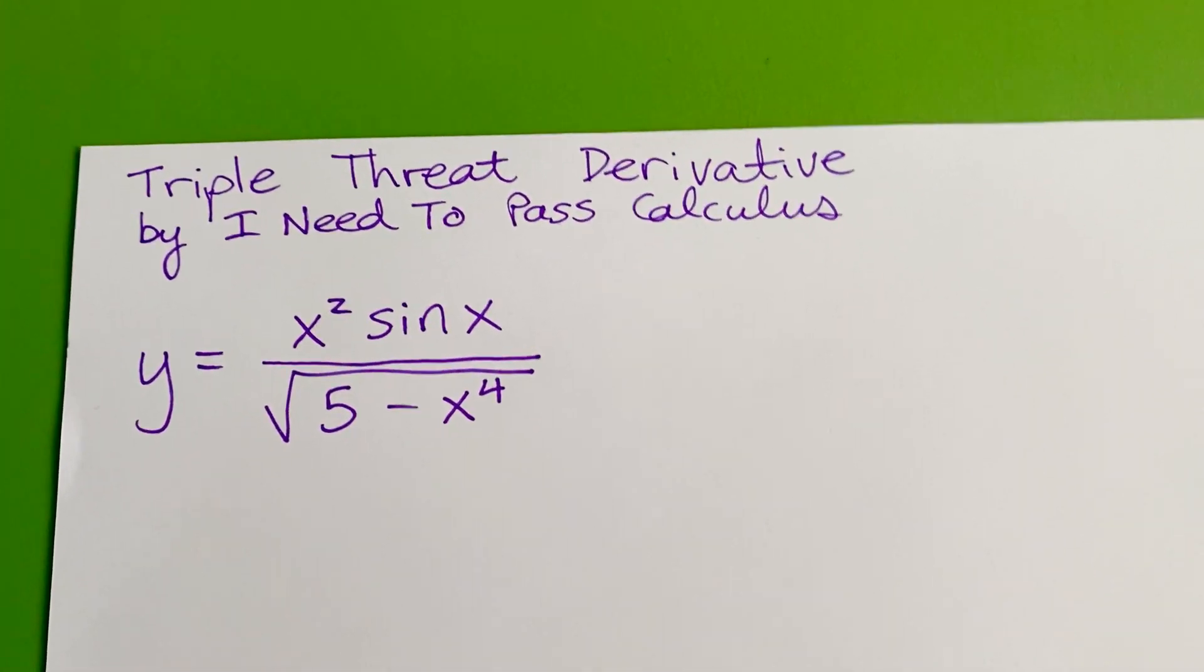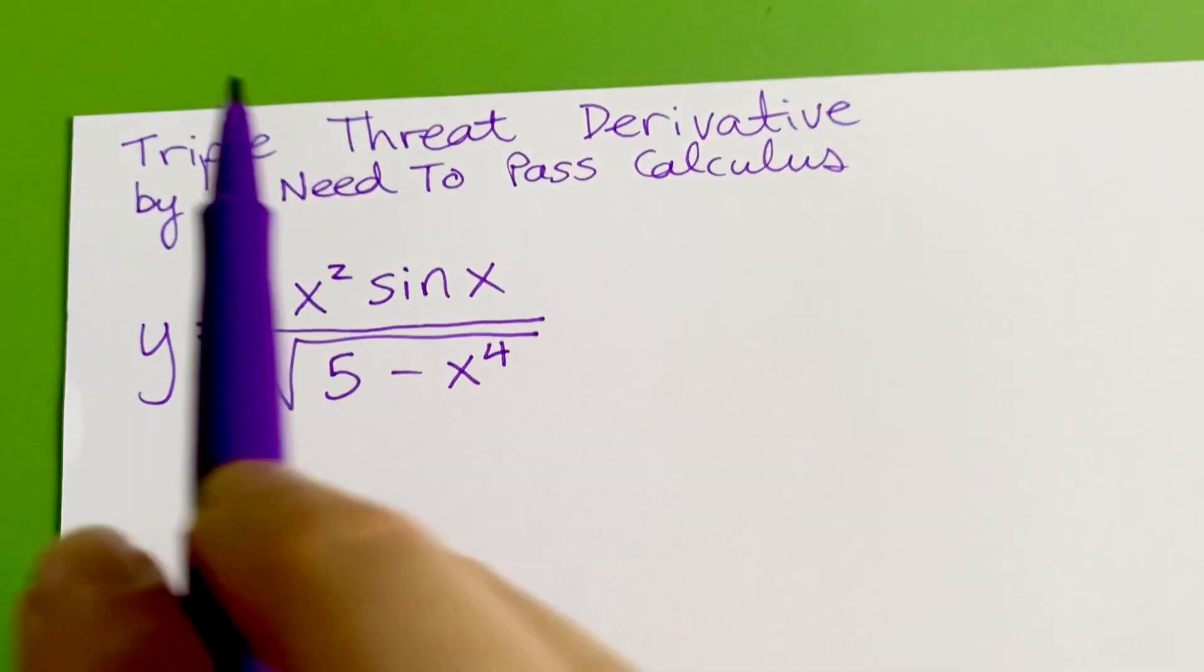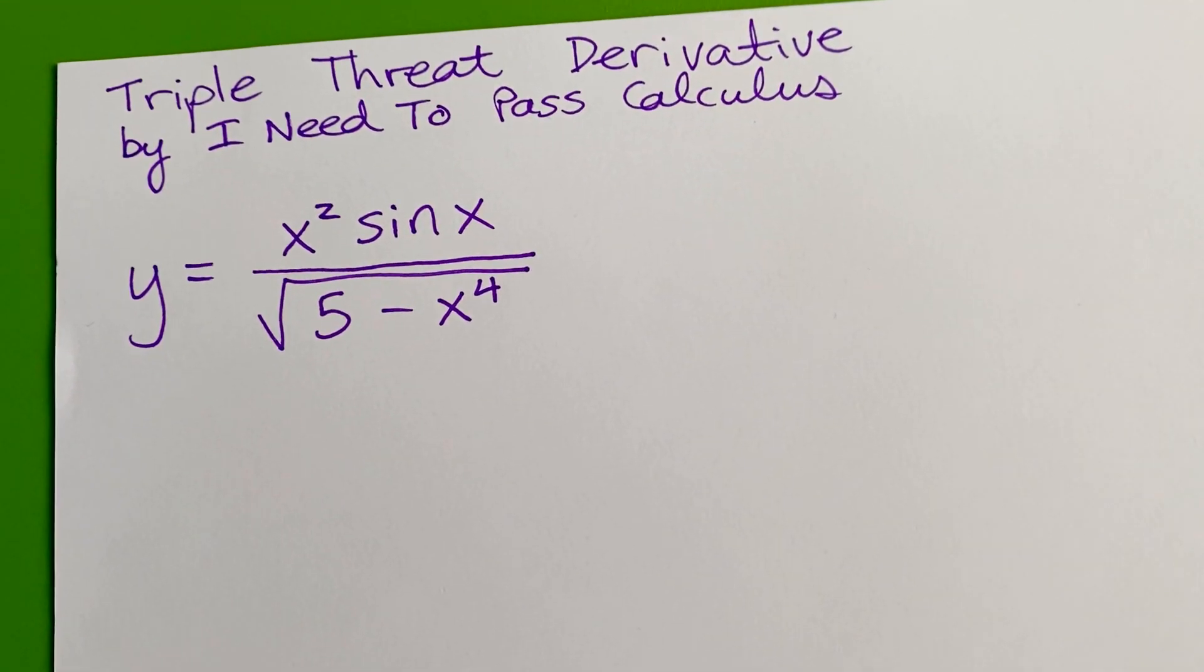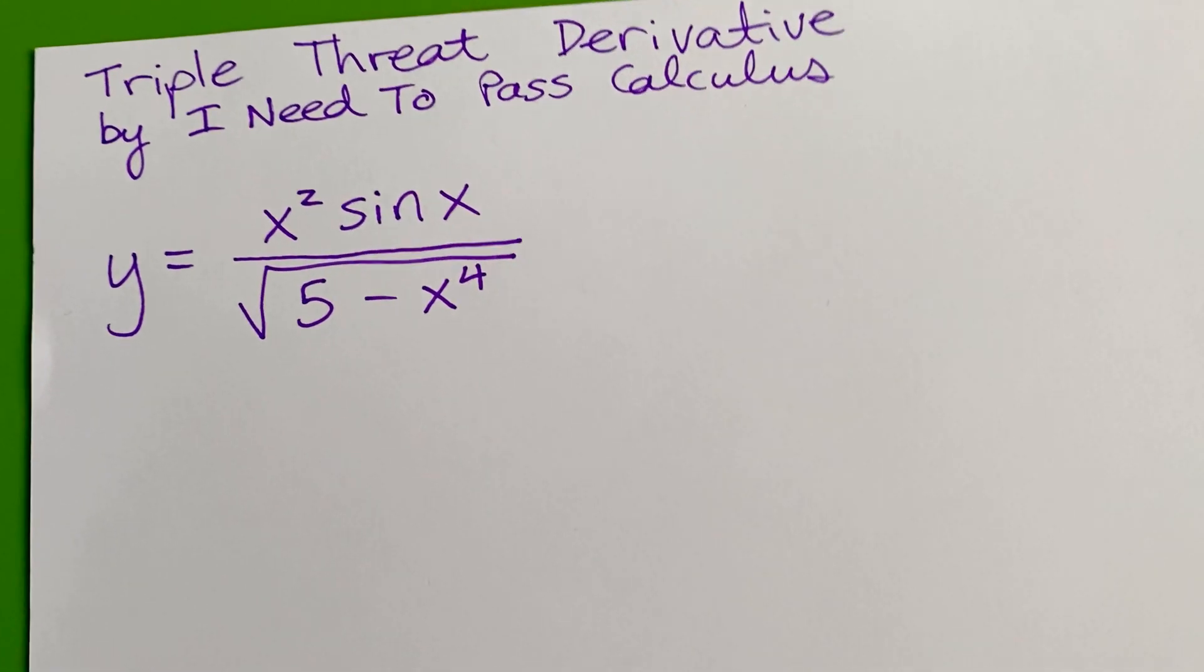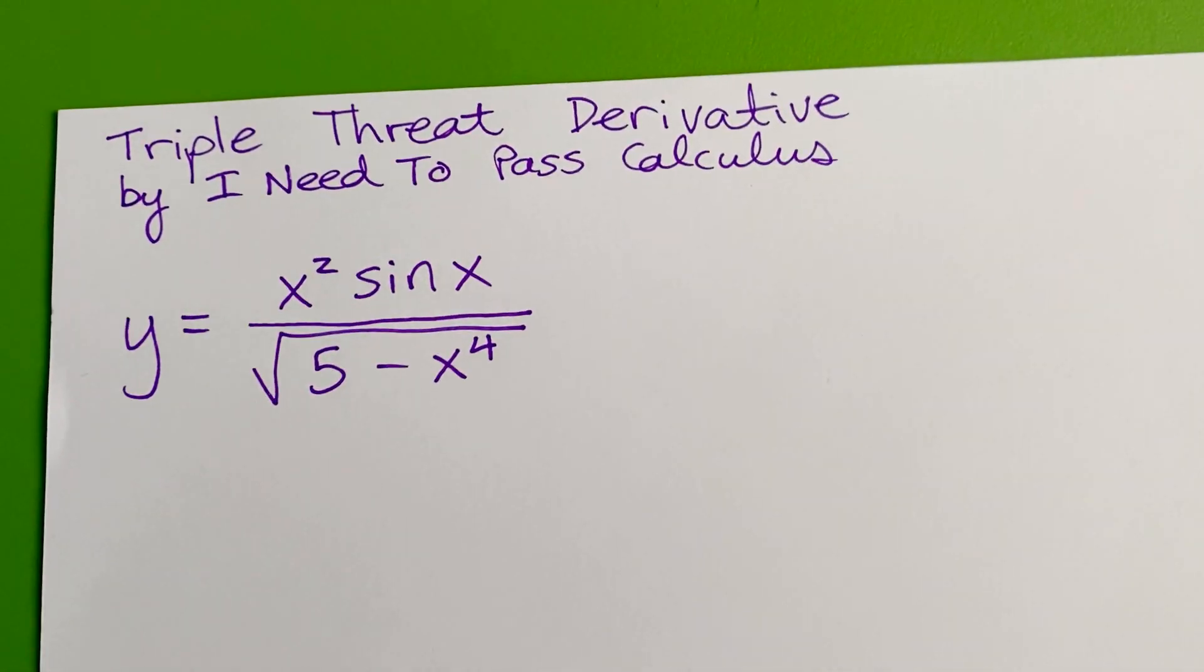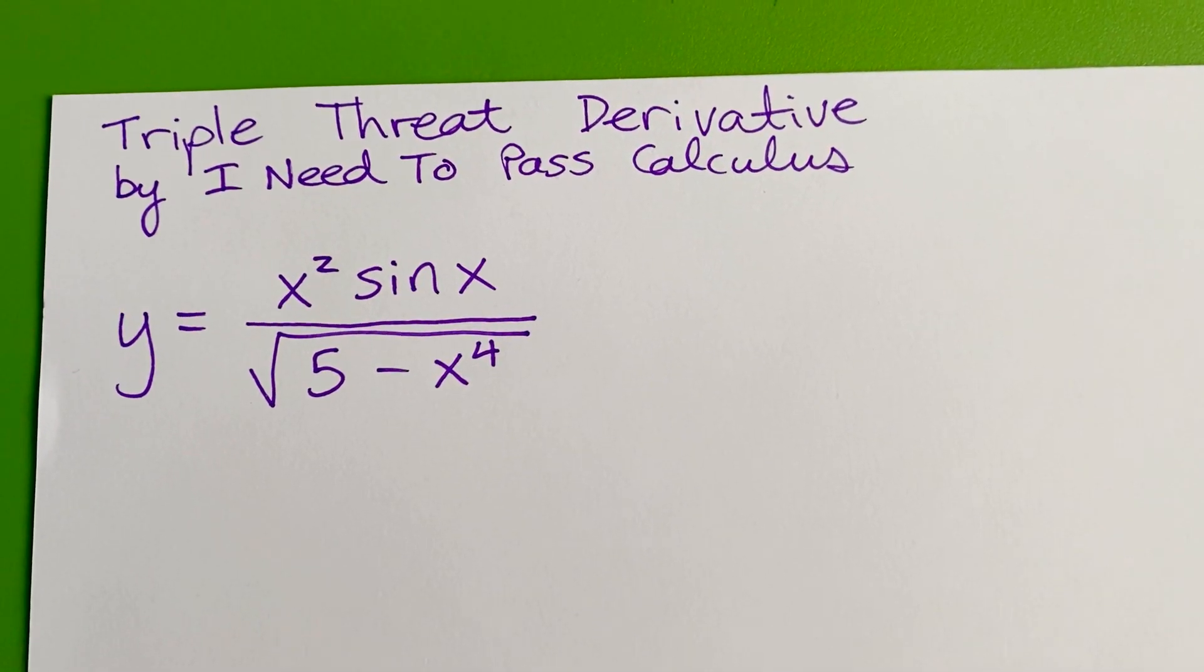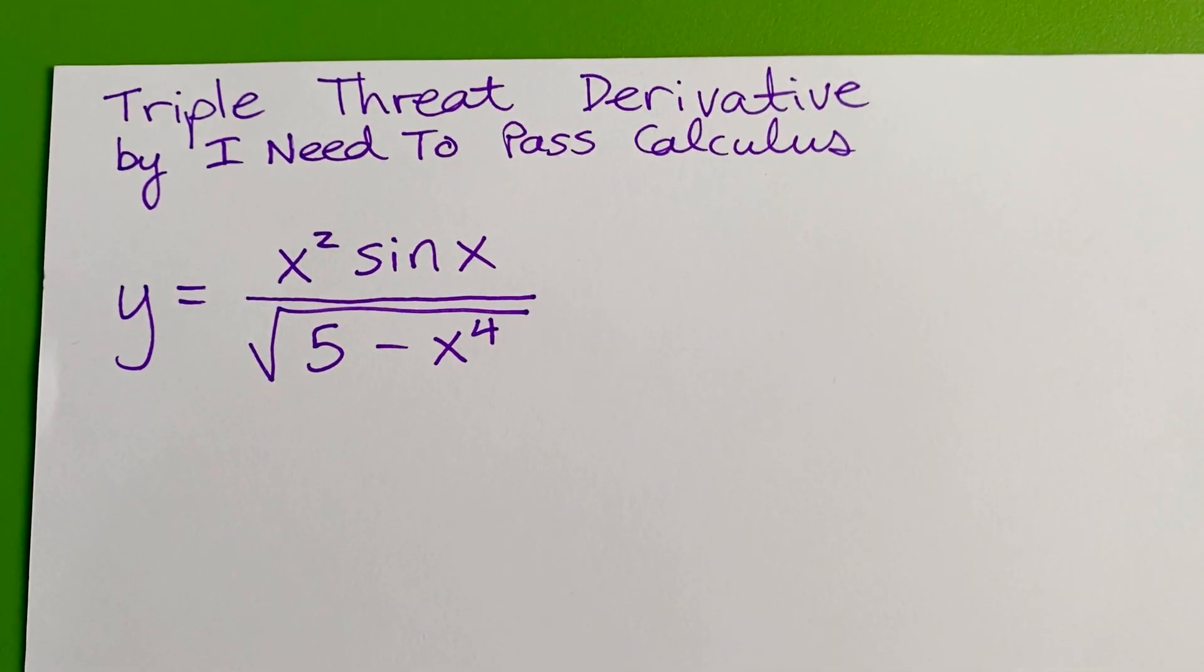Okay, my wonderful calculus adventurers, today I want to do a triple threat derivative. It's a derivative that has the product rule and the quotient rule and the chain rule all in the same problem. It's great practice for staying organized if you have these multiple rule derivatives.